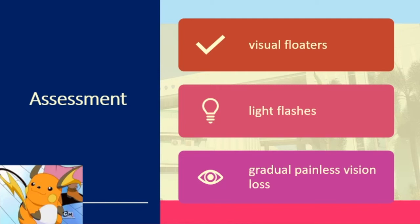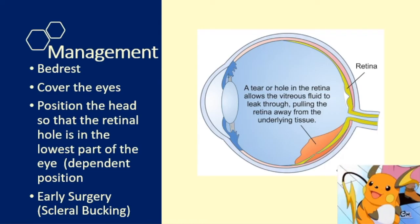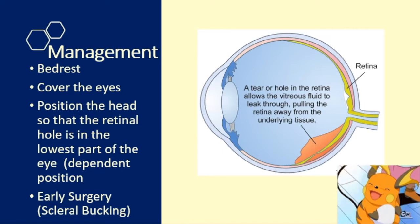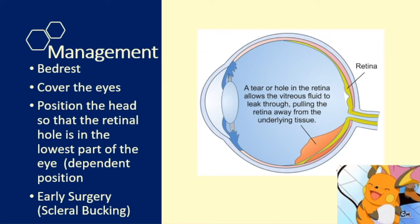There is a blank or black space on the visual field of the patient which suddenly occurred, with no traumatic injury. Because retinal detachment is an ophthalmic emergency, if not addressed, the patient would have irreversible blindness. Management involves bed rest, covering the eye with a bilateral eye patch to decrease stress on the eye, and positioning the head so that the retinal hole is in the lowest dependent position to prevent further damage. Surgery is done as soon as possible, with the surgery of choice being scleral buckling.